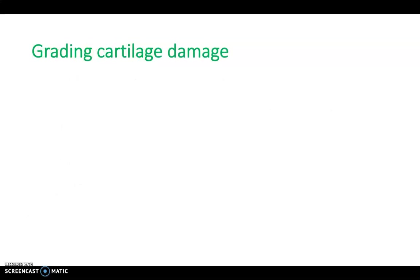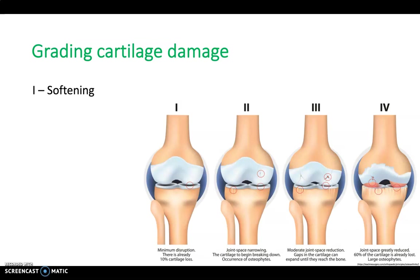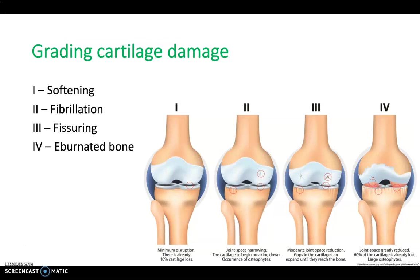Grading of cartilage damage: Grade 1 is softening and swelling. Grade 2 is fibrillation, usually just surface cartilage damage. Grade 3 is fissuring, when damage has reached down to the level of the subchondral bone. Grade 4 is eburnated bone, when friction in the joint causes reactive conversion of subchondral bone to an ivory-like surface at the site of cartilage erosion.